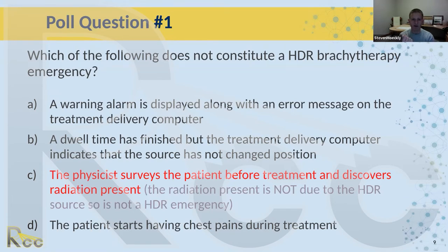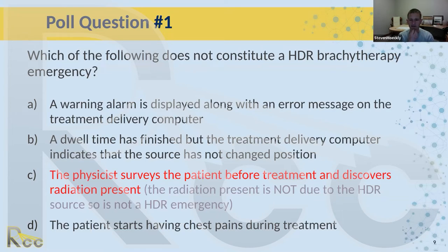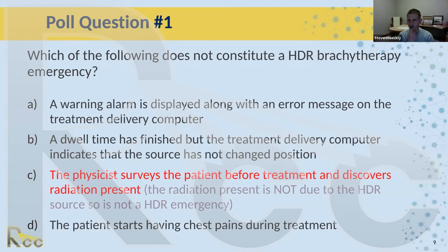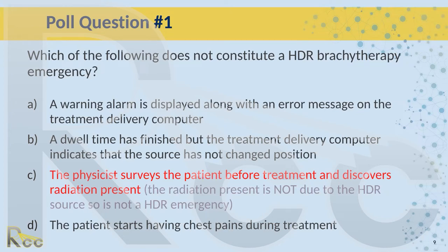A warning alarm with an error message may not be an emergency, but it's definitely an event you need to be aware of. The most common one is the check source not making it through due to an occlusion. A dwell time finishing but the computer indicating the source has not changed position — that IS a radiation emergency. If the source is not pulling back, you need to hit interrupt, then emergency stop, and go through your procedure. If the patient starts having chest pains, you must hit the interrupt button immediately.